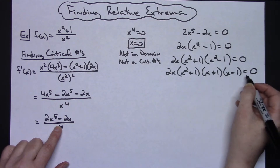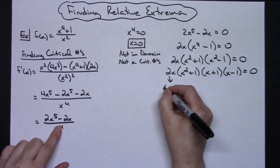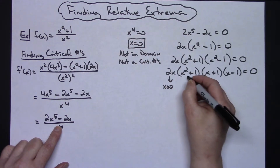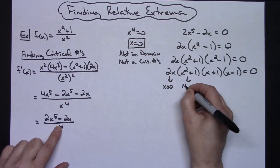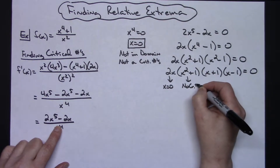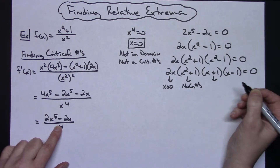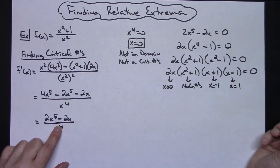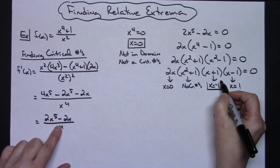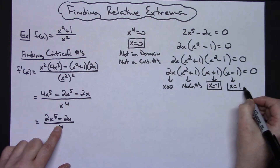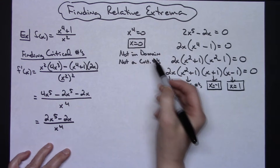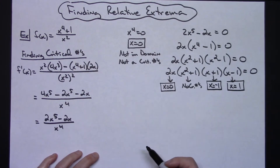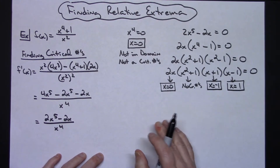Setting each factor equal to zero: from 2x I get x equals zero — again not in my domain. Setting x squared plus 1 equal to zero gives no real critical numbers because it would be an imaginary number. Setting x plus 1 equal to zero gives x equals negative 1. Setting x minus 1 equal to zero gives x equals 1. So our critical numbers are definitely at negative 1 and 1.